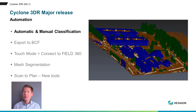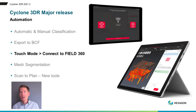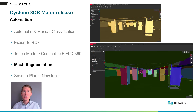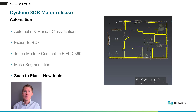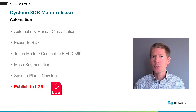Let me remind you of the great new features delivered within Cyclone 3DR 2021.2: automatic and manual classification, export to BCF, connect to Field360 in touch mode, mesh segmentation, and new tools for Scan2Plan. The release also includes many improvements, including the capacity to export LGS point clouds from Cyclone 3DR to every Leica Geosystems software solution.